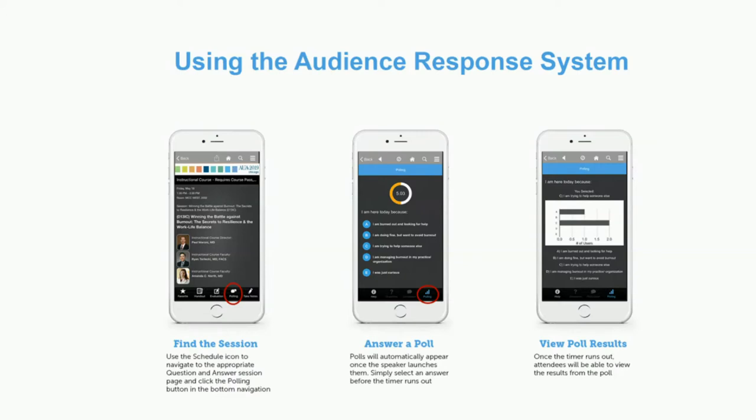I'm going to read a few statements from the AUA and some important aspects of the logistics of the course. AUA policy states that all planners, authors, and presenters must disclose prior to their presentation all relevant financial relationships with any commercial interests. These disclosures are posted on the AUA's annual meeting website and each of the speakers today will have a slide about their relevant disclosures.